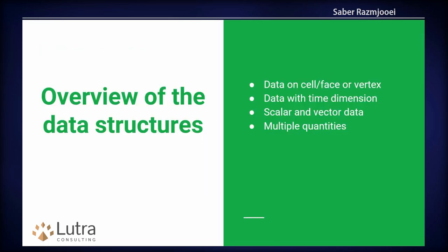Mesh data usually has data on a cell, face, or at each vertex. It typically has a time dimension. You can have scalar data or vectorial data attached to it, and you can have multiple quantities. If you think of HDF or NetCDF, you have a dataset which contains temperature, humidity, and cloud coverage — so you have multiple datasets inside that data container. In the raster world you handle this with bands, but in mesh data you have some sort of quantity.